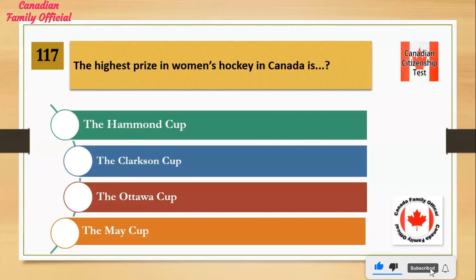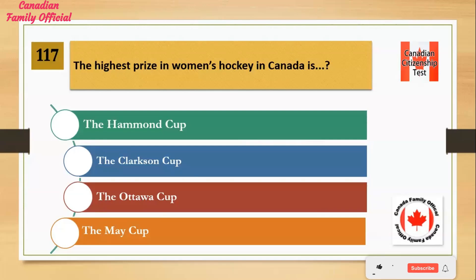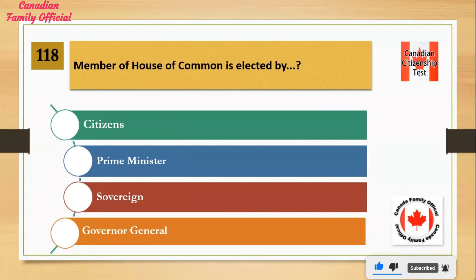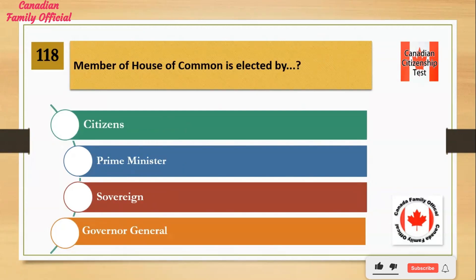The highest prize in women's hockey in Canada is: Number 1: the Hammond Cup. Number 2: the Clarkson Cup. Number 3: the Ottawa Cup. Number 4: the May Cup. And the answer is the Clarkson Cup.